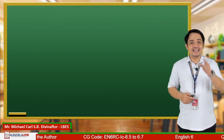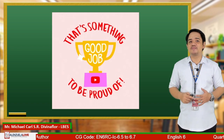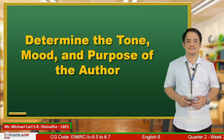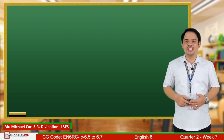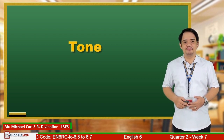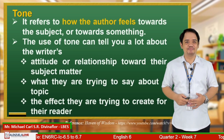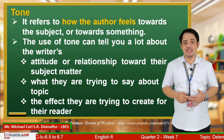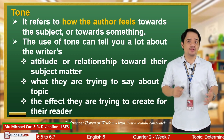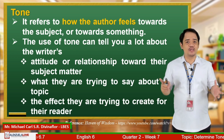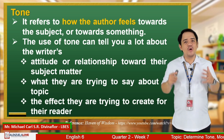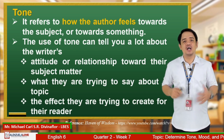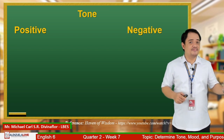How many points did you get? That's amazing that you can still remember our past lessons. Let us now revisit our lesson in determining the tone, mood, and purpose of the author. Let us start with tone when it comes to writing. Tone simply refers to how the author feels towards the subject or towards something. Tone can either be positive, negative, or neutral.